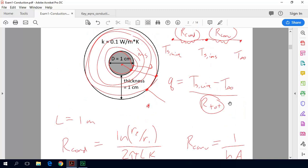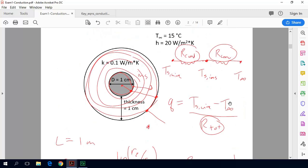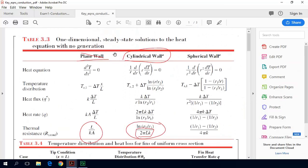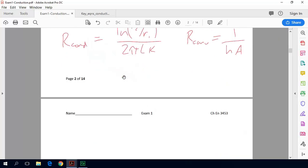So these two resistances as we discussed here they are just in series. When you have thermal resistances in series you just add them to get the total. So our R_total is just equal to R by conduction plus R by convection which is natural log of R2 over R1 divided by 2 pi LK plus 1 over HA.